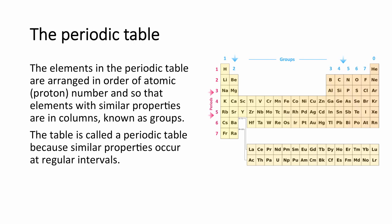Lastly, we are going to look at the periodic table. Elements in the periodic table are arranged in order of proton number, starting at 1, all the way up to 120. It is arranged so that elements with similar properties are in columns called groups — group 1, group 2, group 3, group 4, group 5, and so on. The rows are called periods and they also have a regular repeating pattern of properties.